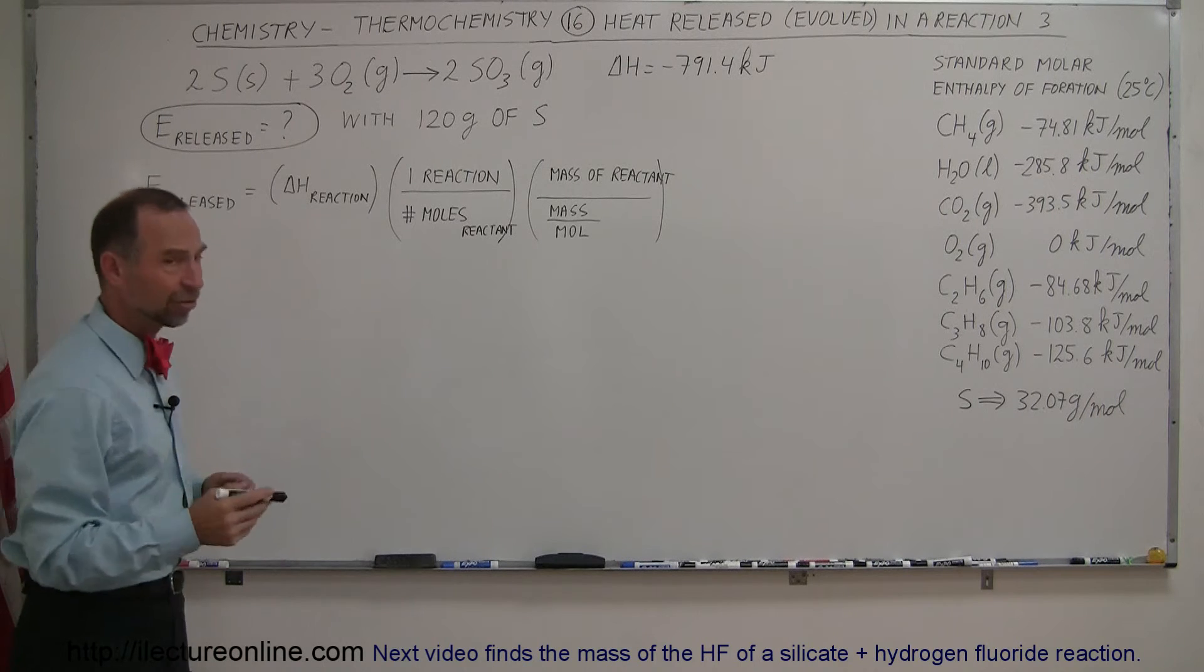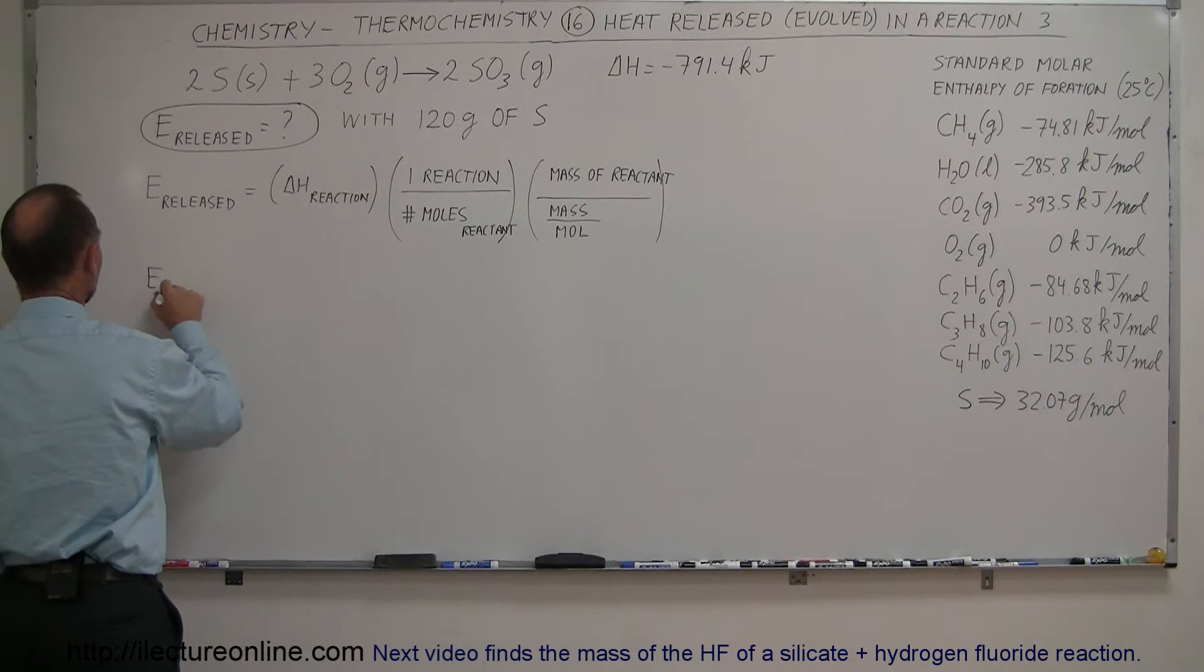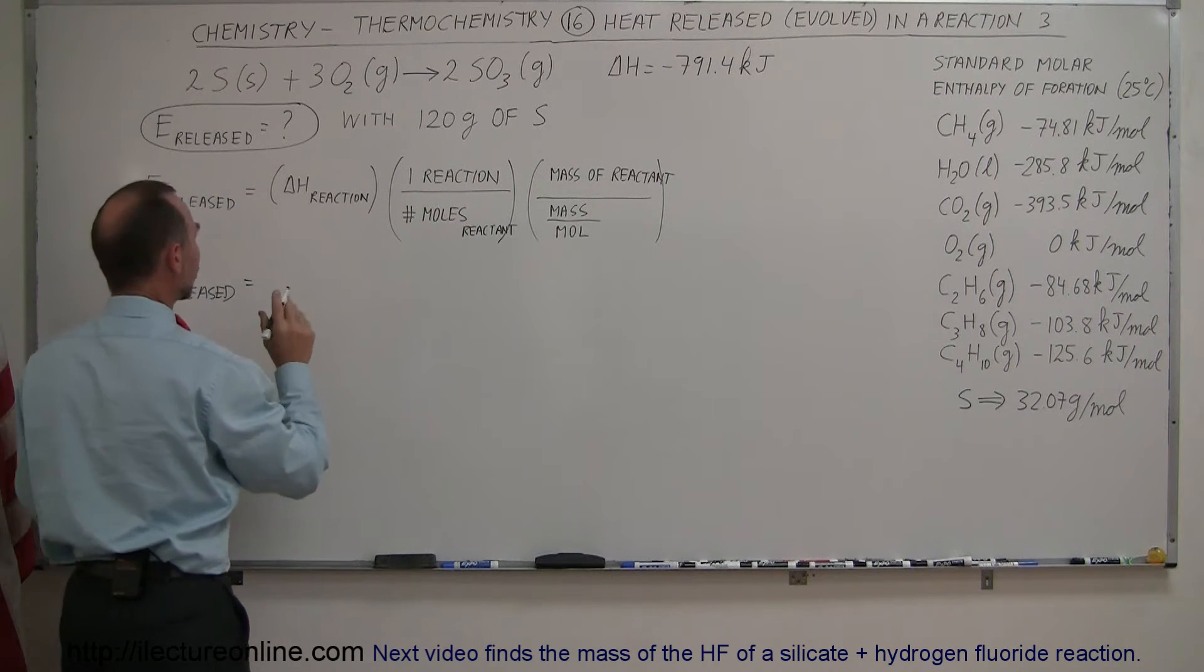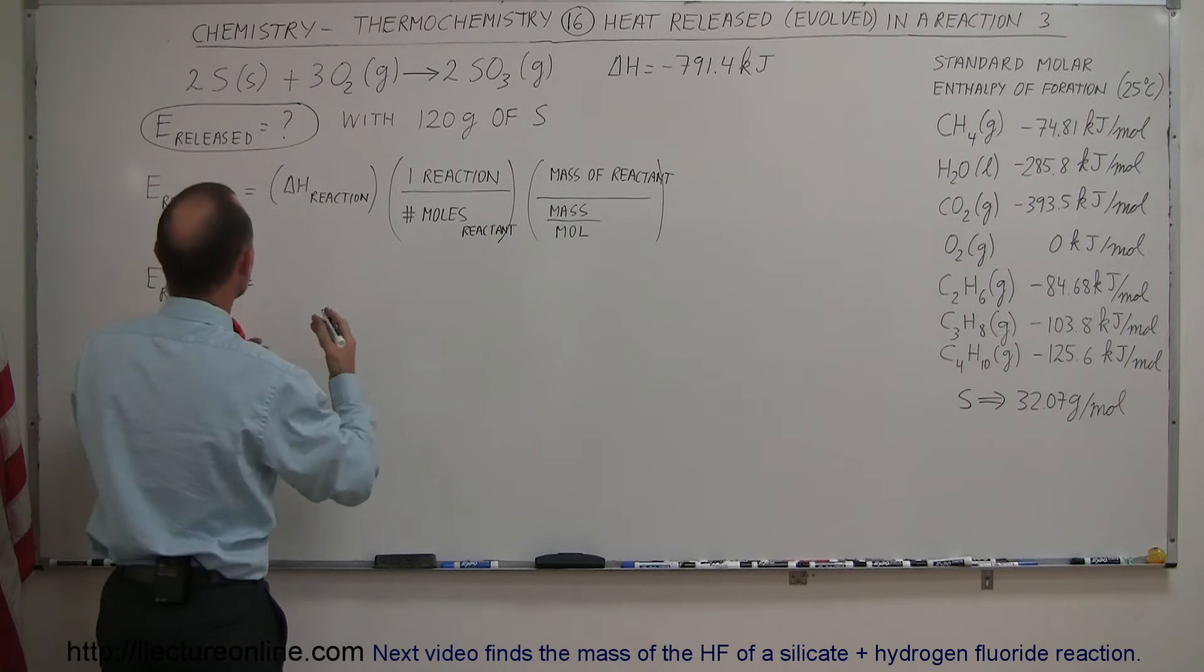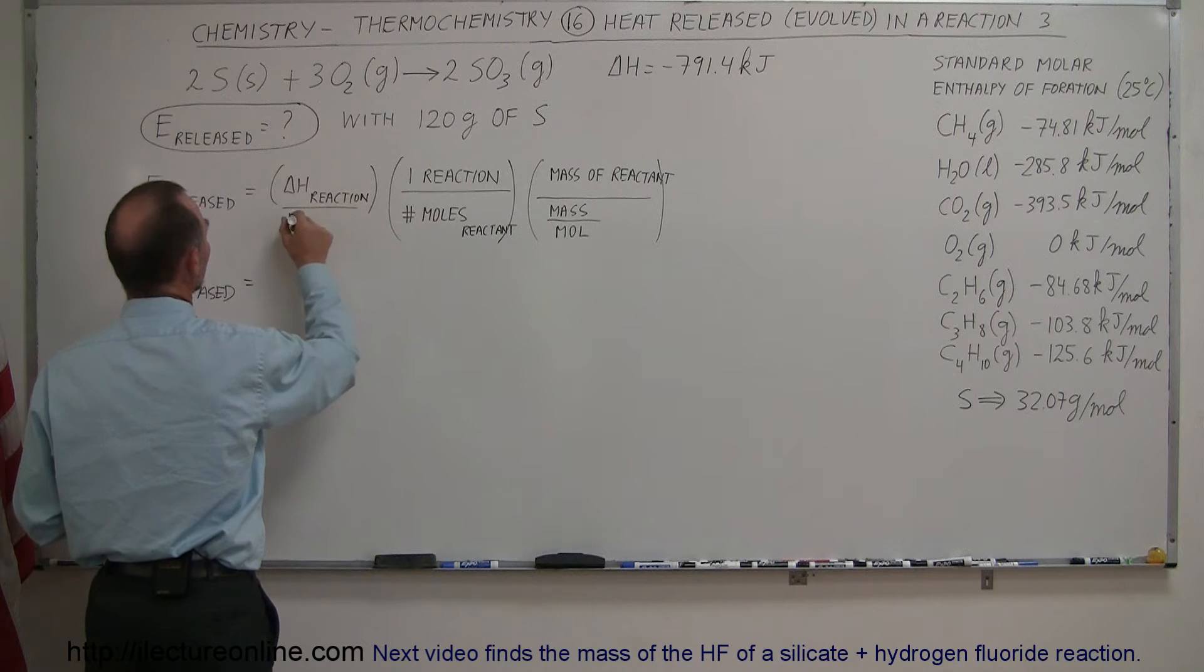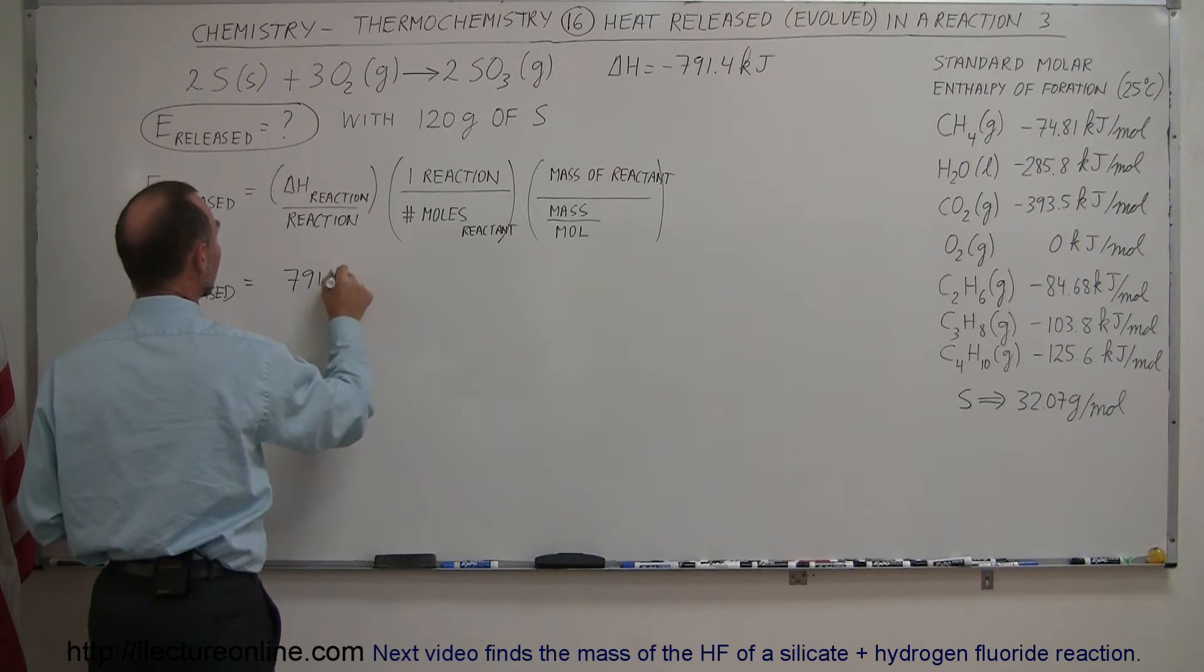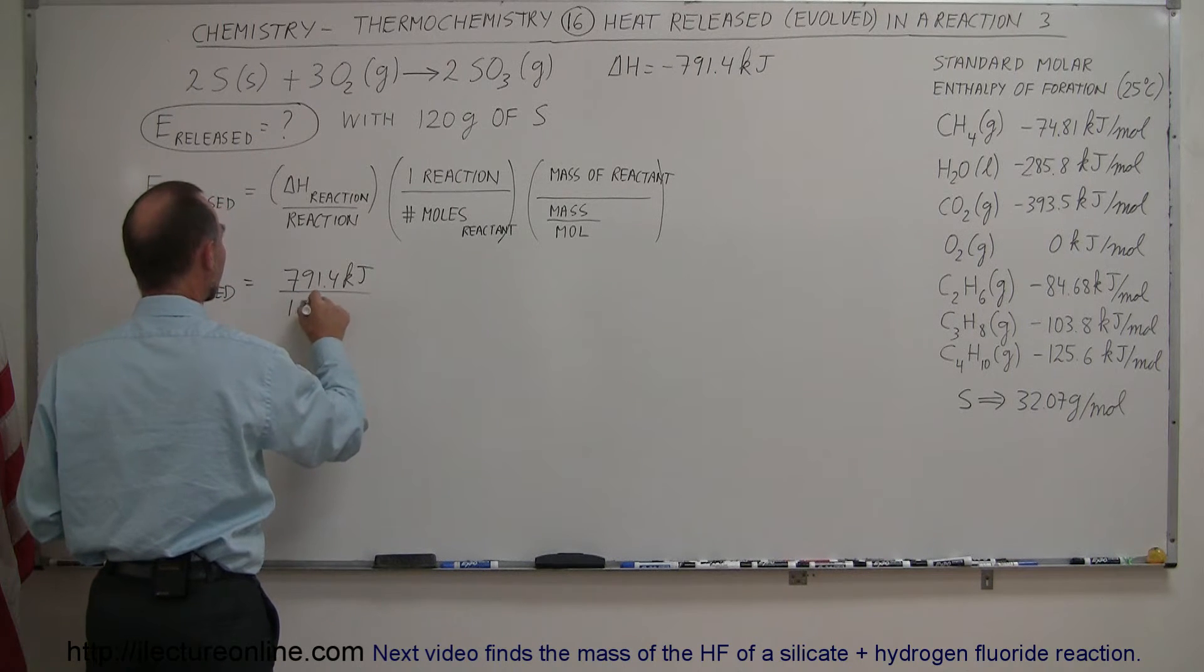Here's our equation again, so let's go ahead and put in the numbers that we have. So the energy released is equal to the energy of the reaction or the enthalpy of the reaction, but of course we're going to call that a positive number because we're looking for the energy released. So that is per reaction, right? So we have 791.4 kilojoules released for every reaction.